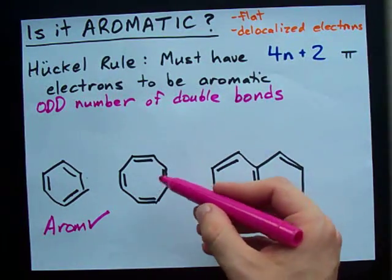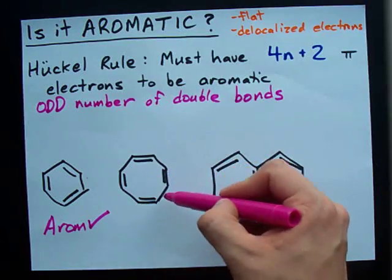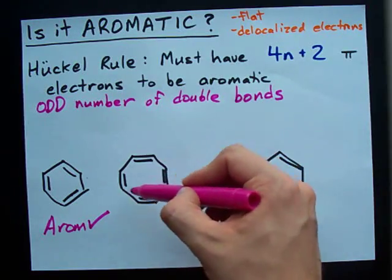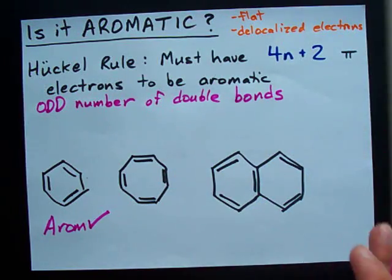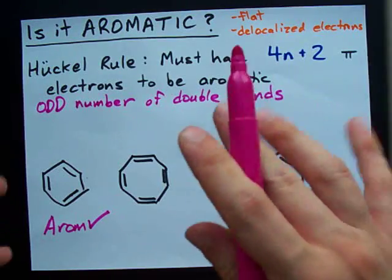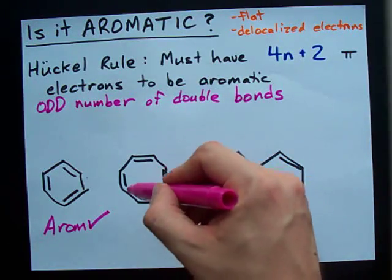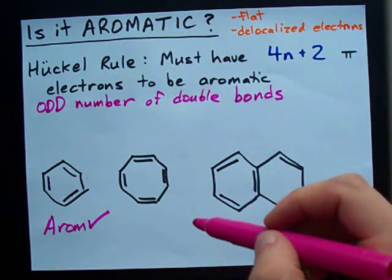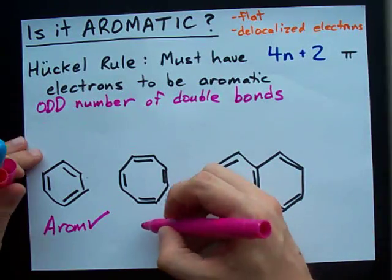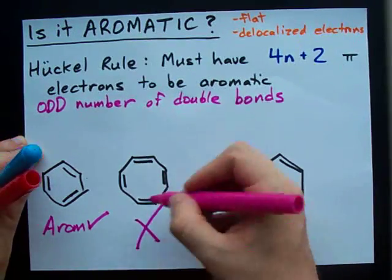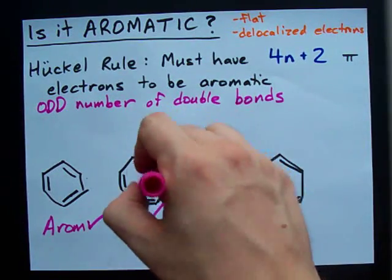This here is 8 carbons in a ring with alternating double bonds. Looks like it could be aromatic — let's find out. One, two, three, four double bonds. Well, that's not odd. That's not an aromatic molecule.